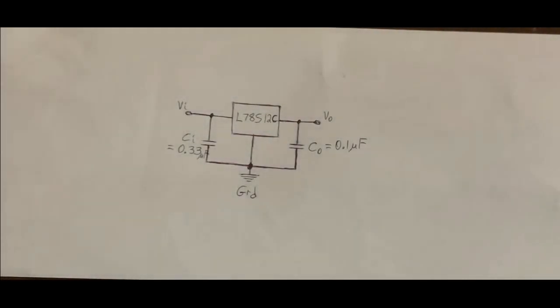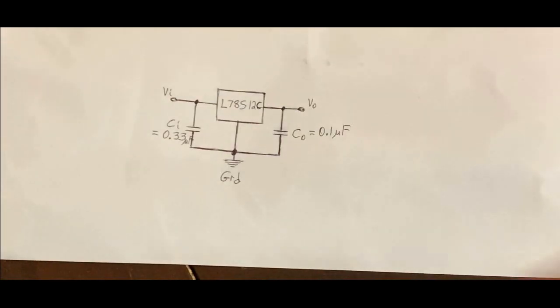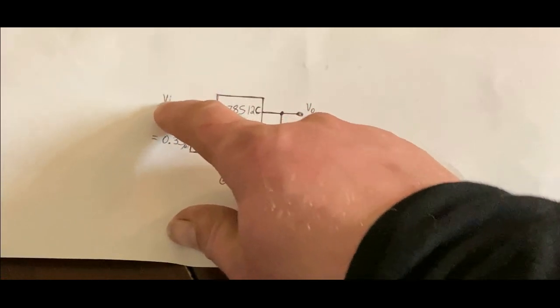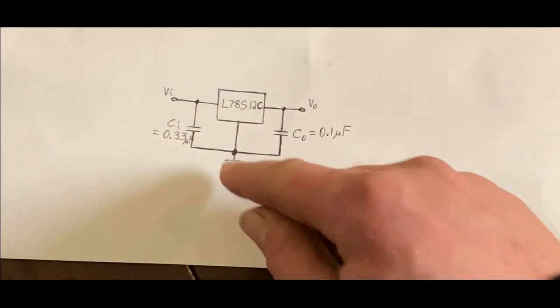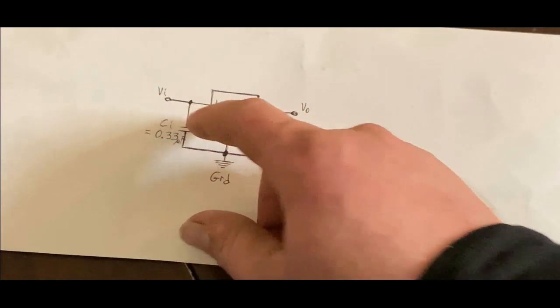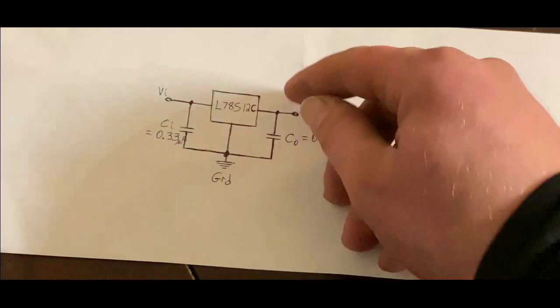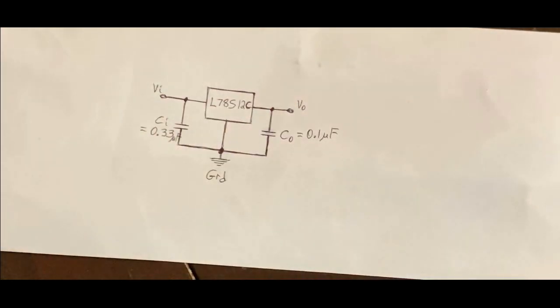Okay this is the schematic from the datasheet of the 12 volt regulator. As you can see it's real simple. There's a voltage in, voltage out, ground. So basically you hook your voltage in, voltage out, and then the ground connects to both of these through a capacitor.